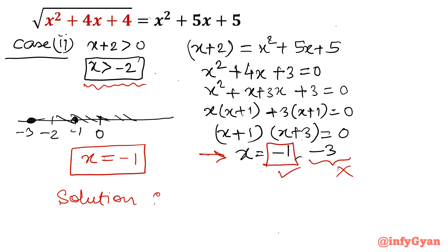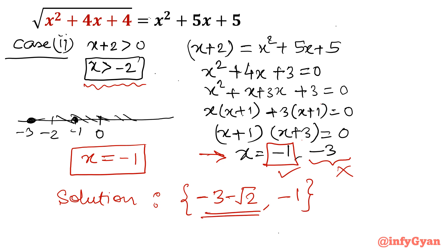So the overall solution is: x = -3 - √2 (from Case 1) and x = -1 (from Case 2). If you want to check, you can substitute these values and verify that both sides come out equal.